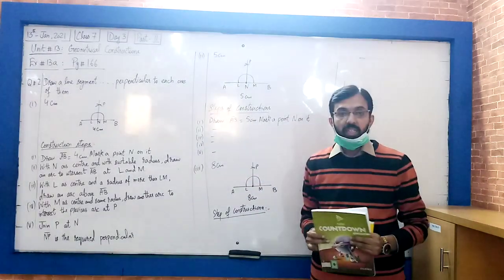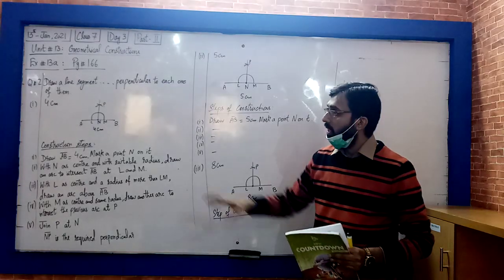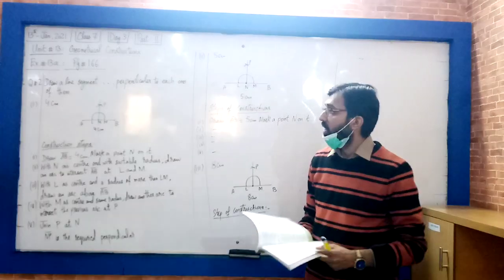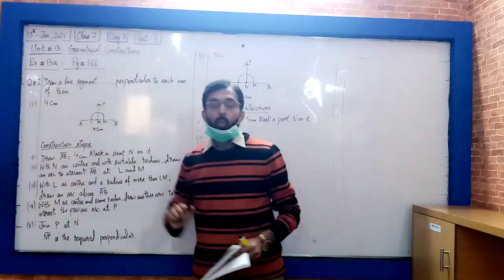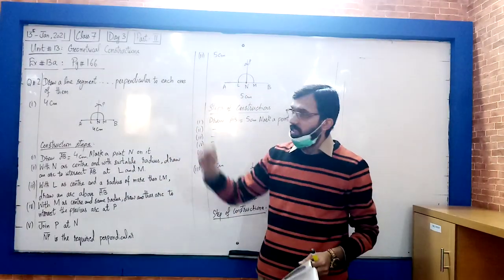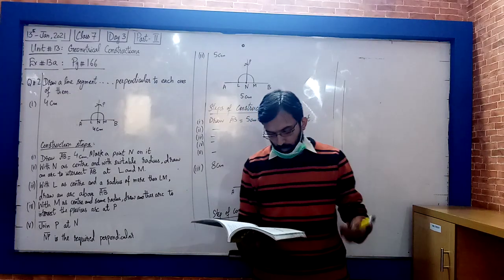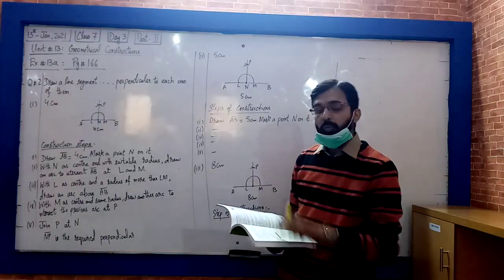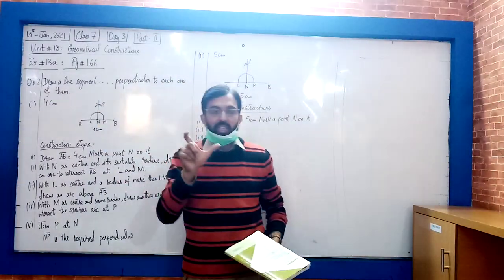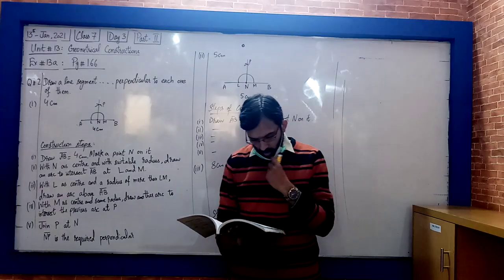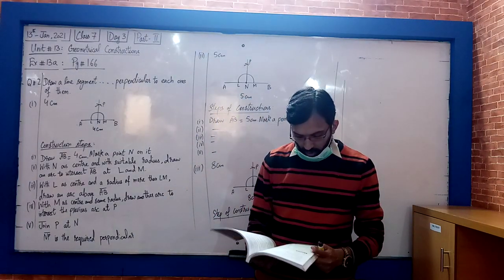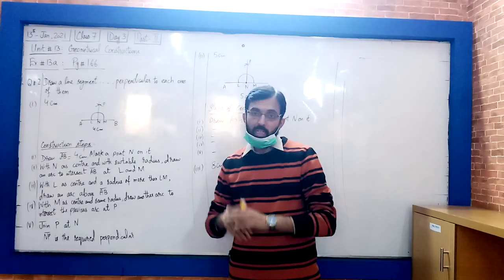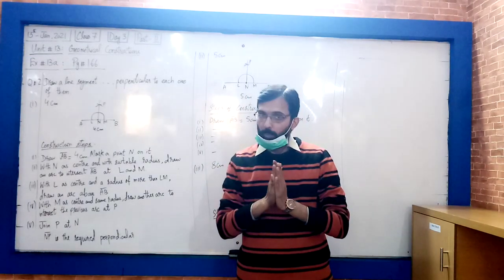This is how we will understand question 2 and we will see how the construction steps we have seen. Question 2 is from exercise 166. Draw a line segment of the given measurement. The first part is 4cm, so we will draw a line segment. Next step, draw a perpendicular to each one of them. You have to draw a 4cm segment and then draw a perpendicular.